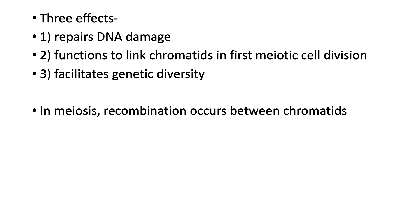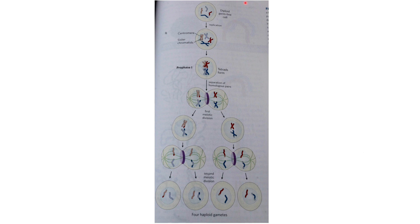This has three effects: one, it repairs DNA damage; it also functions to link chromatids in the first meiotic cell division; and it facilitates genetic diversity. In meiosis, recombination occurs between chromatids. We have a diploid germline cell with a centromere and sister chromatids attached. In prophase one, tetrads form. You have separation of homologous pairs in the first meiotic division with daughter cells, then a second meiotic division, and you get four haploid gametes from this, with recombination occurring along this line.